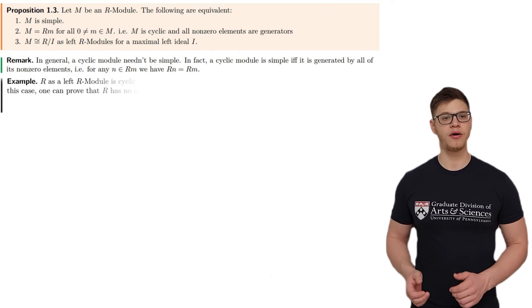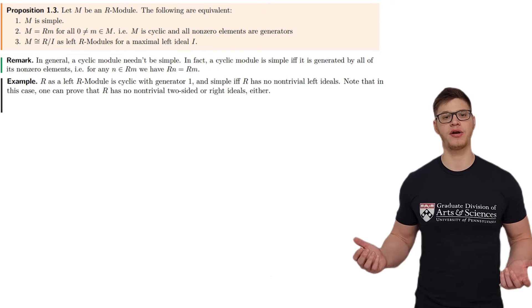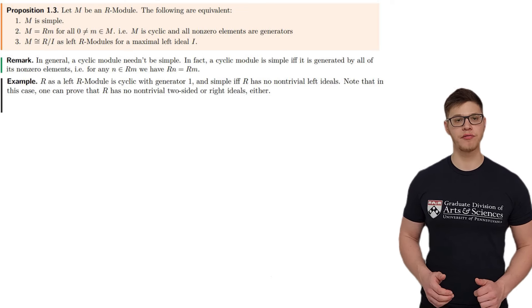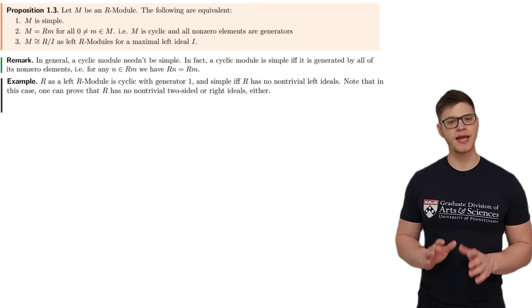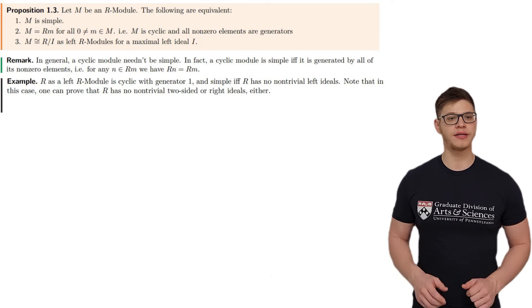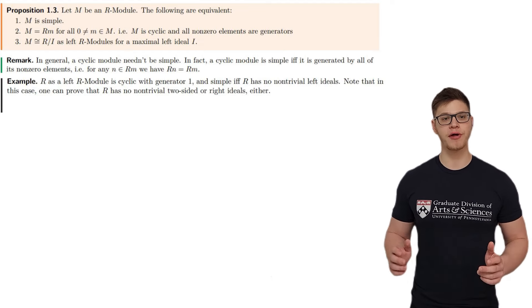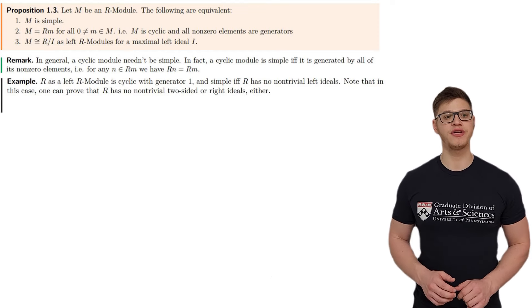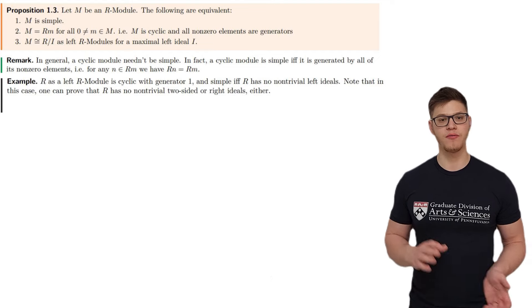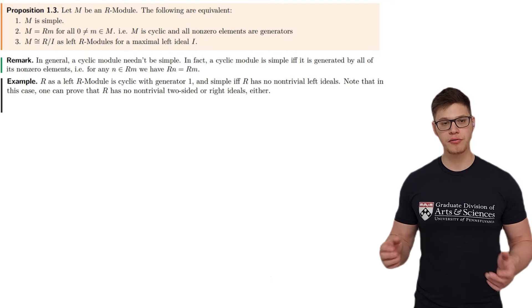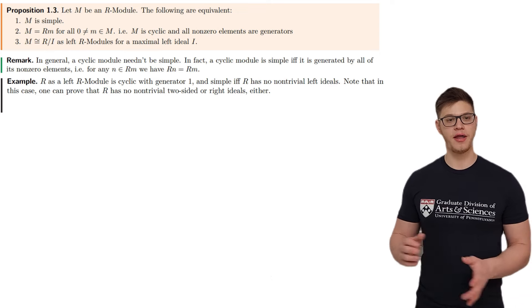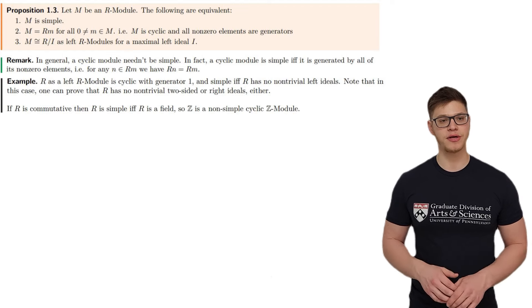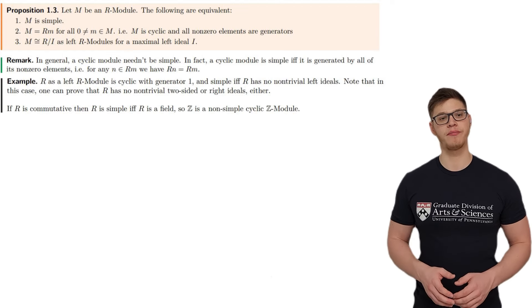For example, R as a left module over itself is cyclic with generator 1, and simple if and only if it has no non-trivial left ideals. Note that in this case, one can prove, even though it's not trivial, that R has no non-trivial two-sided or right-sided ideals either. In particular, this implies that R is a division ring. This is identical to the proof that a commutative ring with no non-trivial two-sided ideals is a field. If R is commutative, then R is simple if and only if R is a field. So the integers are a cyclic non-simple Z-module.